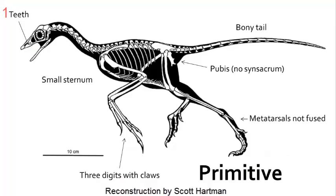Let's look at the primitive features of Archaeopteryx — we can think of these traits as dinosaur traits. First, it has teeth: small teeth in sockets, similar to theropod dinosaurs, but unserrated.